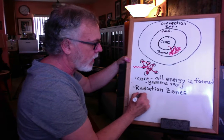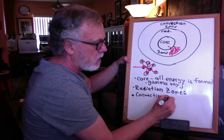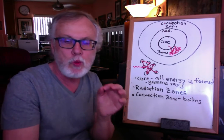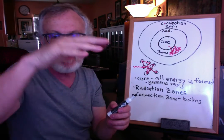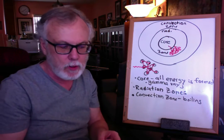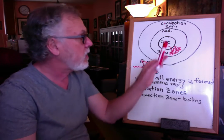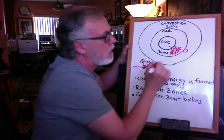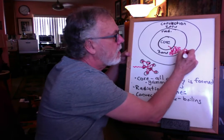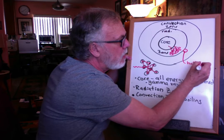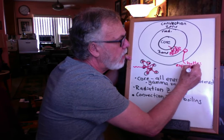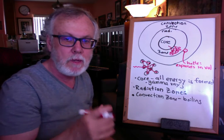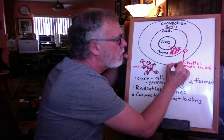In the convection zone, another name for this process is boiling — this is the boiling of the Sun. If you've ever stood over a pot of boiling water, you see the roiling action of water rising up, steam flowing away, and water dropping back down. As the energy makes it out of the radiation zone into the convection zone, it heats up the gases there, and because those gases are hotter, they expand in volume.